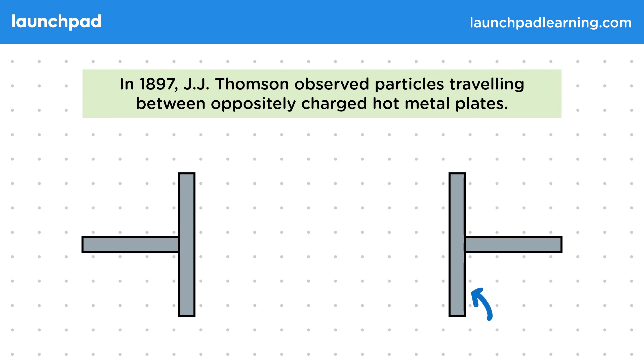The experiment involved two charged plates with a potential difference between them. A small particle released from one plate would move between the plates due to the electrostatic force to the other. The particle could be detected by measuring the change of charge on the plates. What can we figure out about this particle?